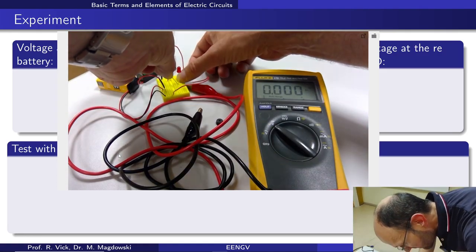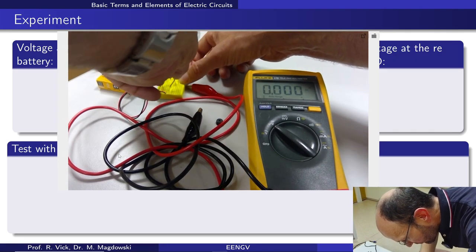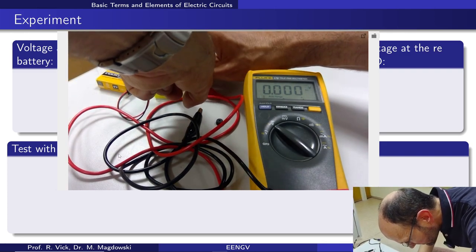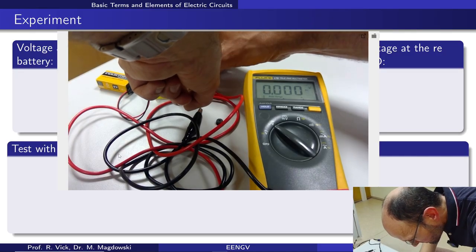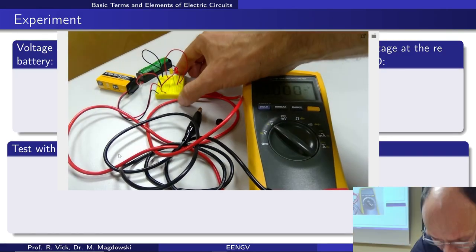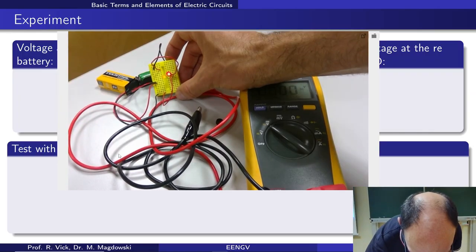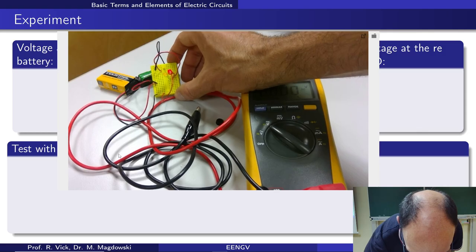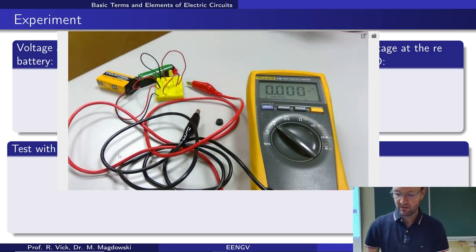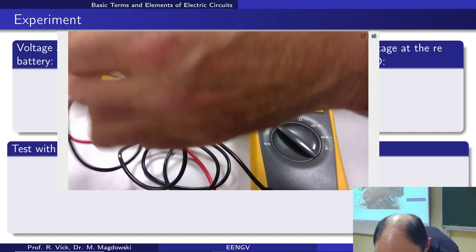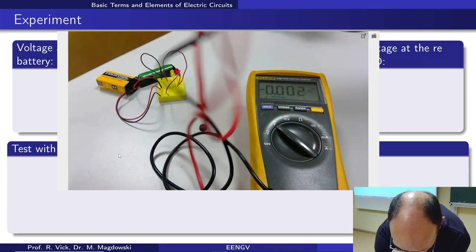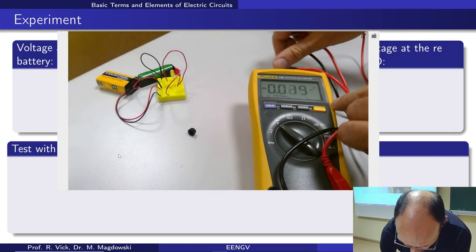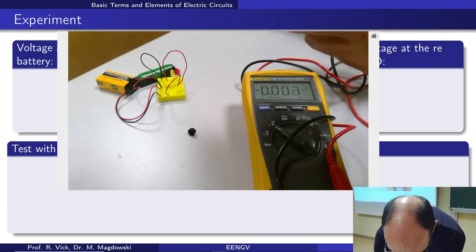And so now if I connect these two diodes in series, then both of these diodes will somehow light up. And so now I can with my measurement device here also try to measure the voltage drop across each of these diodes.